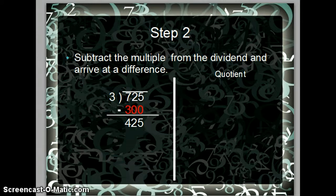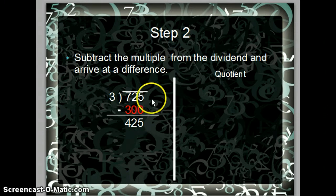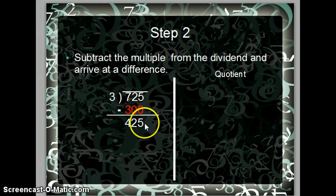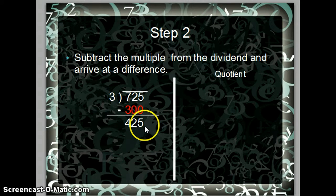Step 2, you want to subtract the multiple that you arrived at from the dividend to arrive at the difference. Remember the difference is an answer in a subtraction problem. So 725 minus 300 gives you the difference of 425.